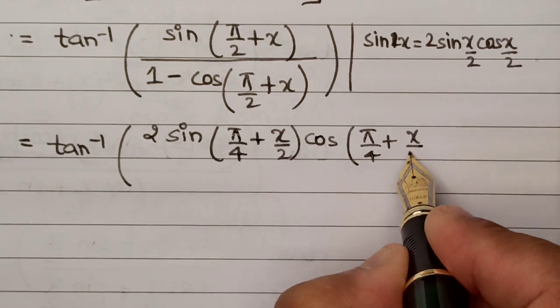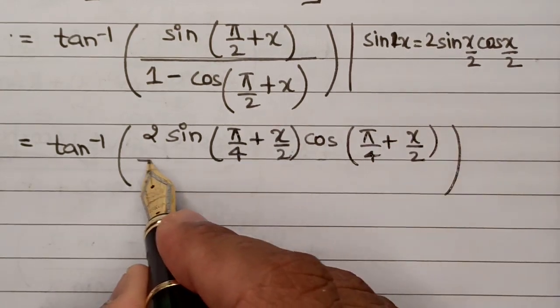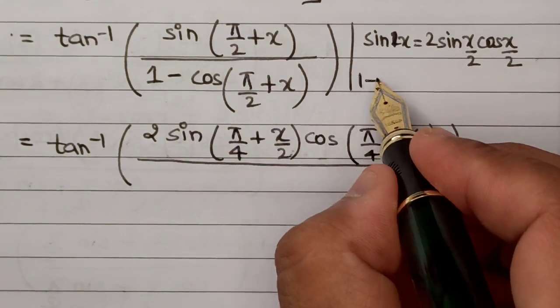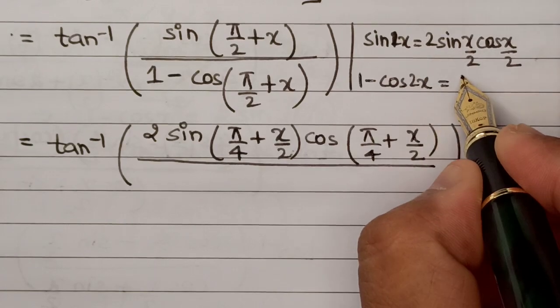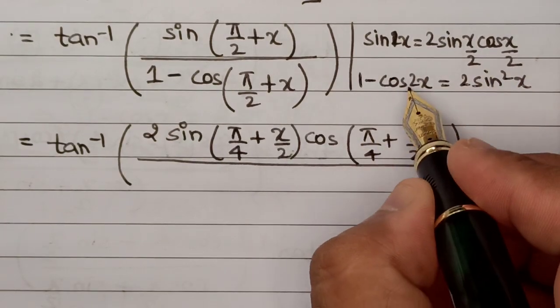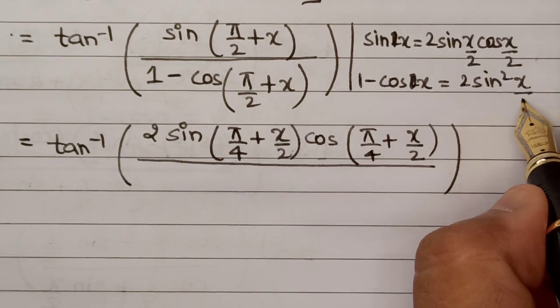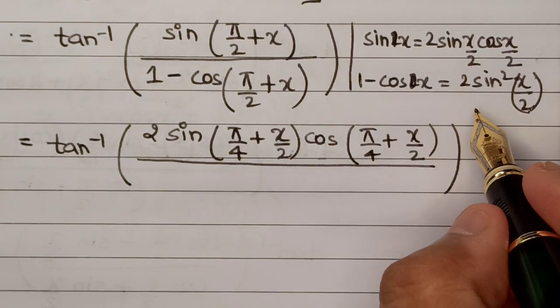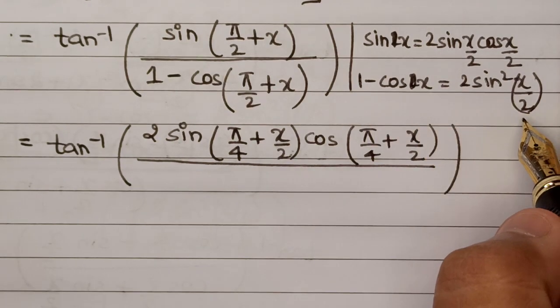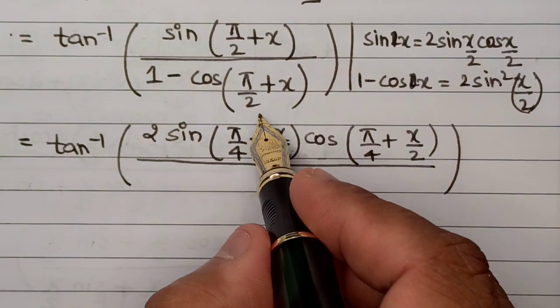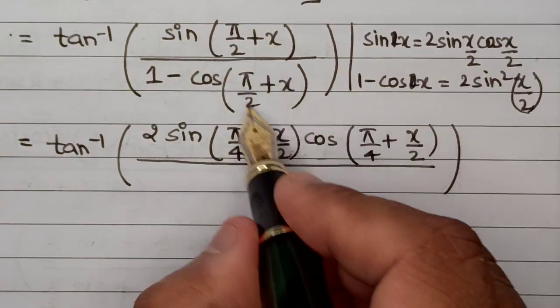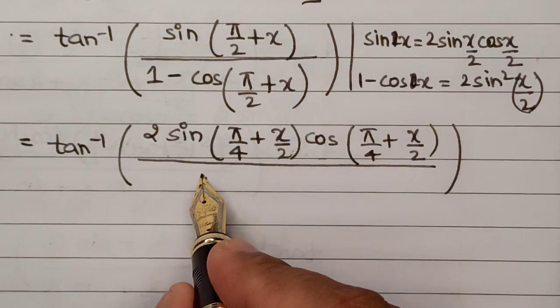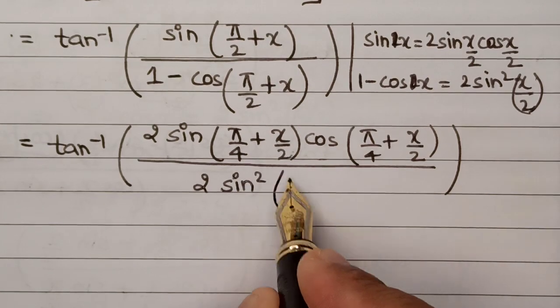Now we can substitute the values of the denominator as well. The formula that I have for 1 minus cos of 2 theta or 2x is 2 sine square x. So if I divide this value of x by 2 and divide this on the other side as well, this formula modifies as 1 minus cos x can be written as 2 sine square x by 2. We'll apply the same logic in this angle as well, where if the angle is divided by 2, this entire angle that is pi by 2 plus x will get divided by 2. So this will become 2 sine square pi by 4 plus x upon 2.